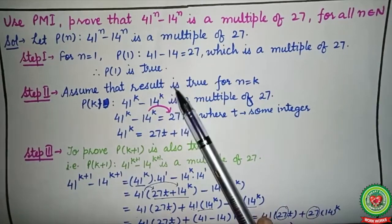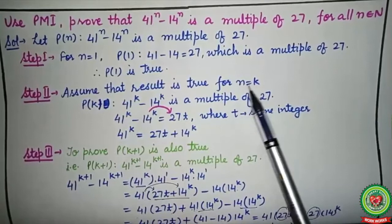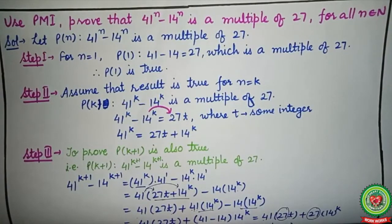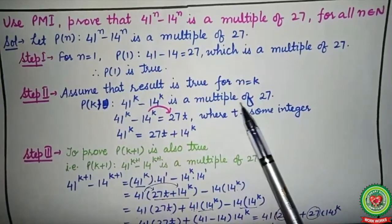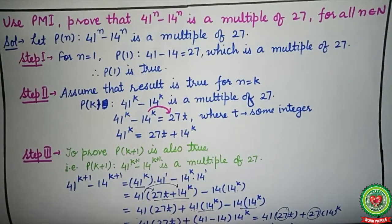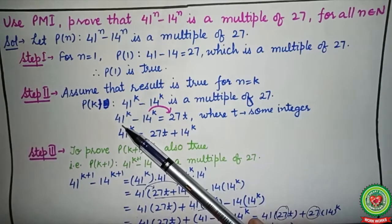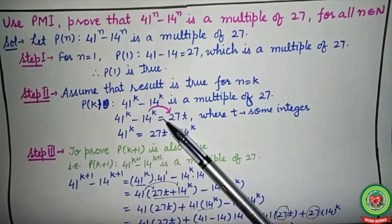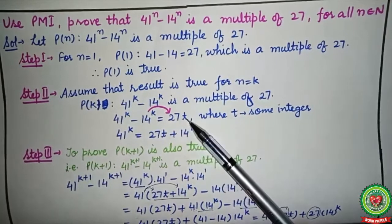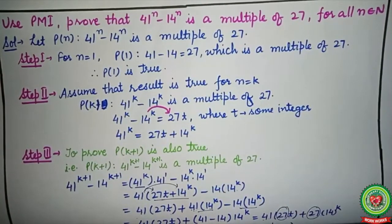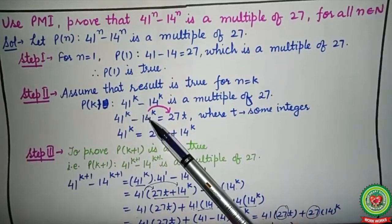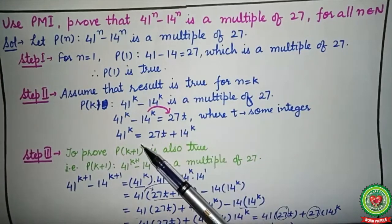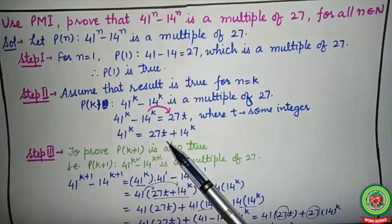In Step 2, assume the result is true for n = k, where k is any positive integer. So P(k): 41^k − 14^k is a multiple of 27. This means 41^k − 14^k = 27t, where t is some integer (positive, negative, or zero). Rearranging, we get 41^k = 27t + 14^k.